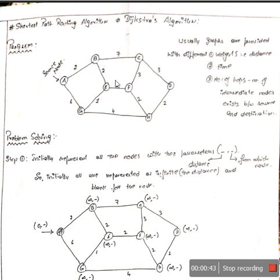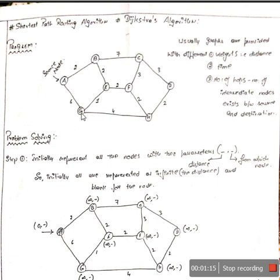You can see there is a graph given here. The source node — what we usually call the initial node — is represented as node A. From here we need to find the shortest path. What this algorithm does is, from the source node A, we find the shortest path to every other node: A to B, A to C, A to G, A to E, A to F, A to H, and A to D.